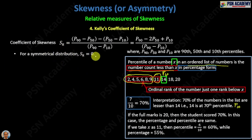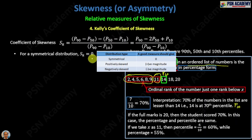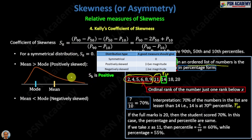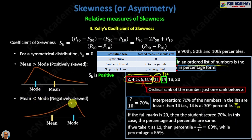This SK will give you zero for a symmetrical distribution, because the criterion for a good relative measure of skewness says the measure should give zero for a symmetrical distribution. For a positively skewed distribution, the measure should give a positive value, and here it does. For a negatively skewed distribution, where the mean is less than the mode, the measure gives a negative value. So this measure qualifies as a good relative measure of skewness.